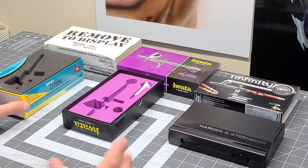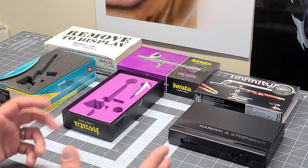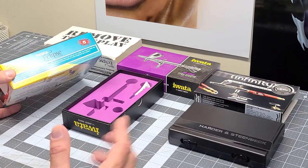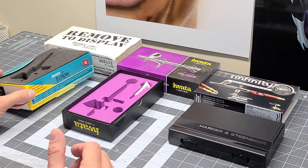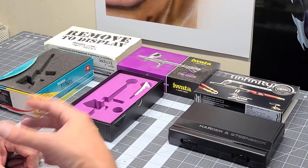The three airbrushes I'm showing you today: an Iwata HP-CS Eclipse. That is the brush I started with and still use today - have had it for over 20 years. Most of your airbrush artists will refer to it as their workhorse. The Iwata Eclipse takes a 0.35 millimeter needle, so you can get really fine detail with it, not as fine as a micron, but fine detail all the way up to nice broad spray. That's why they call it the workhorse.